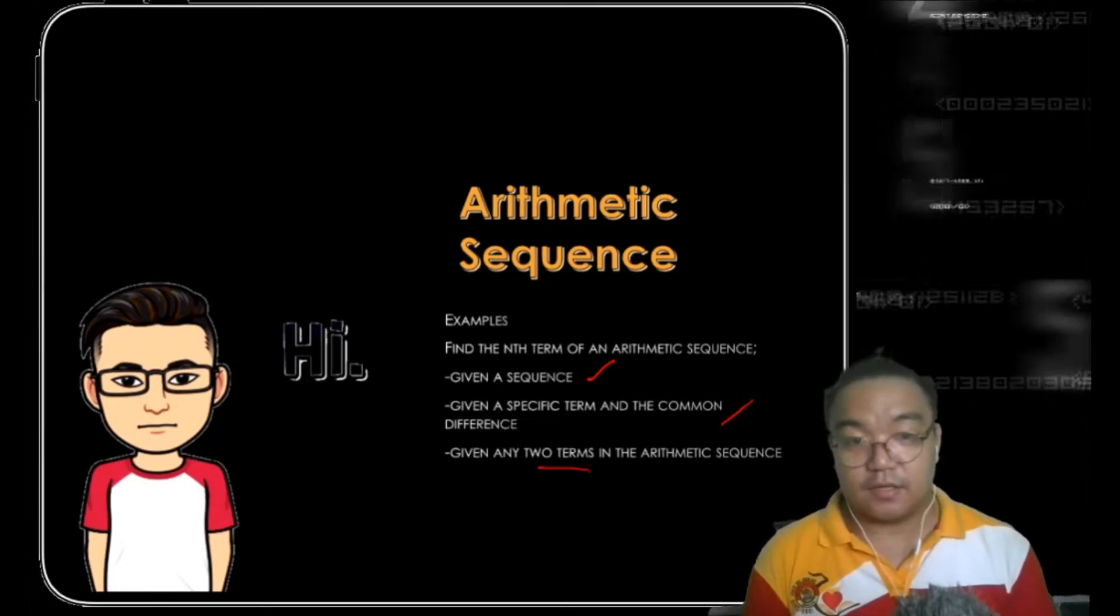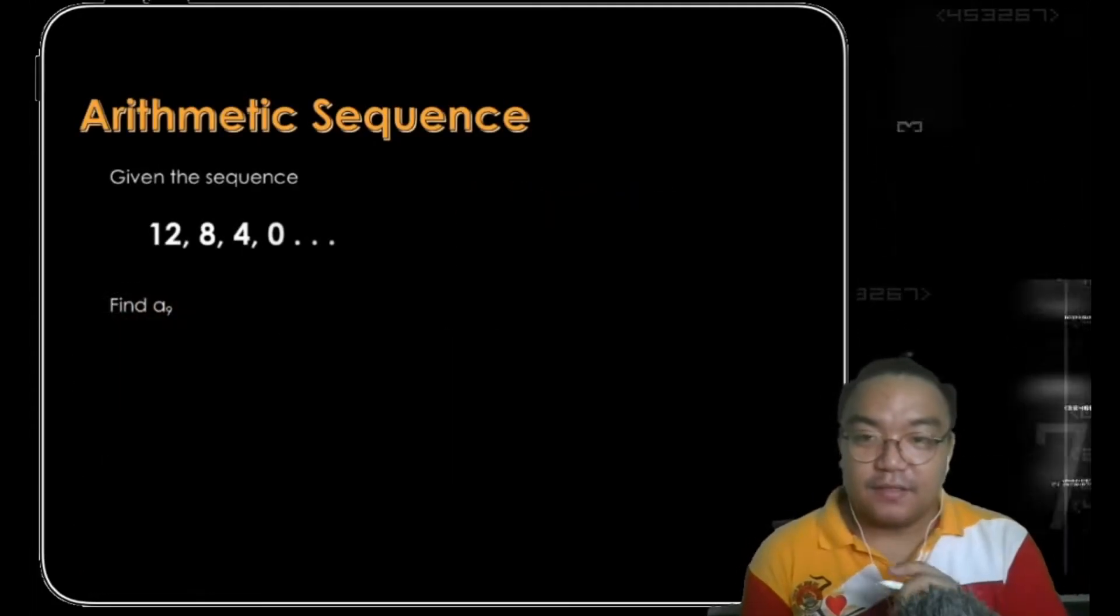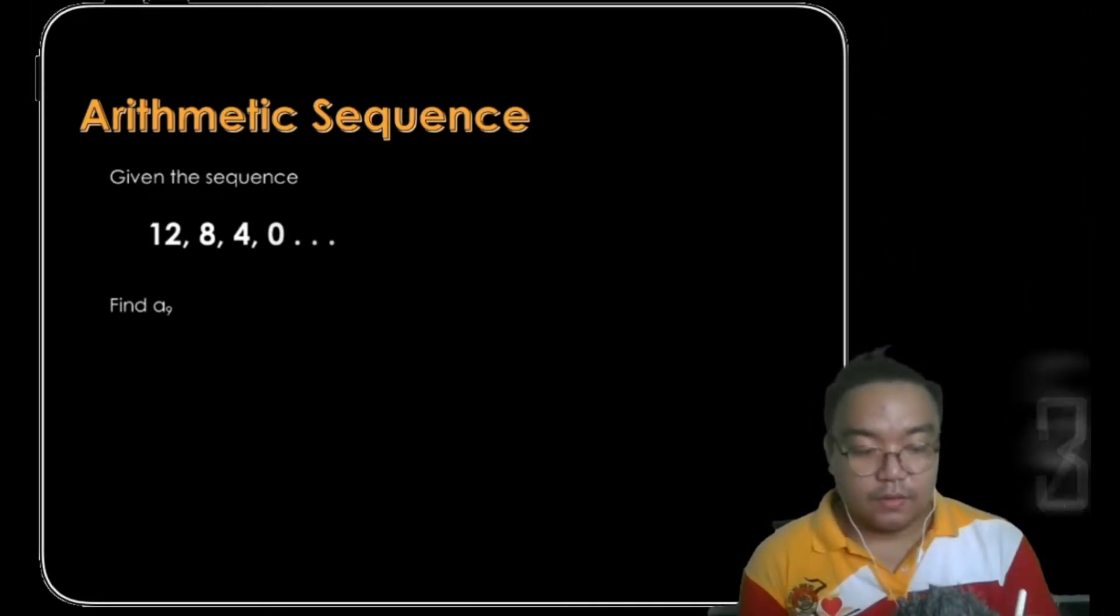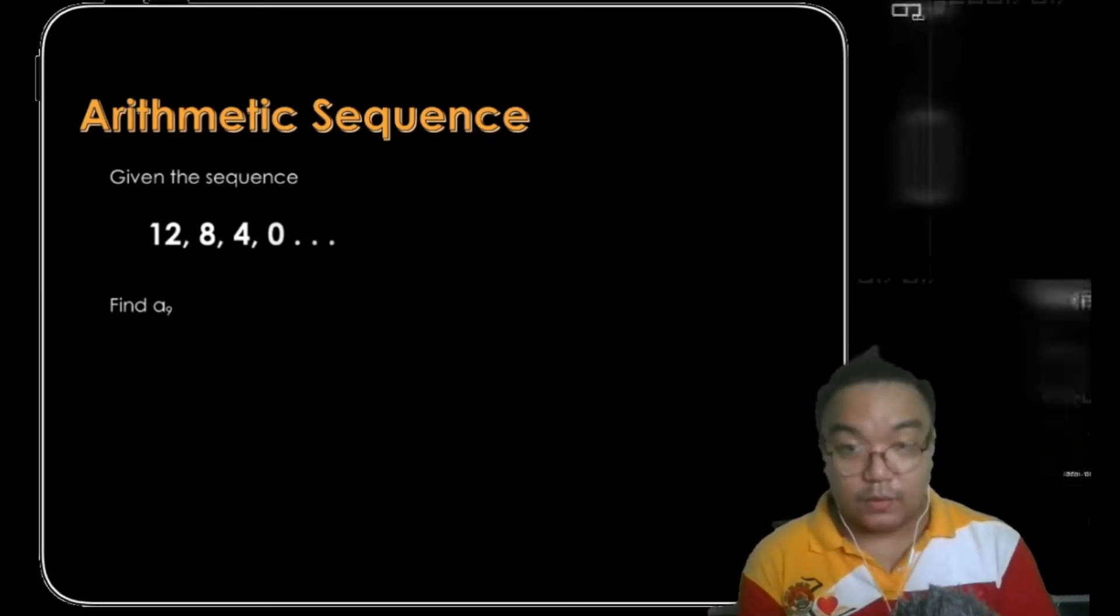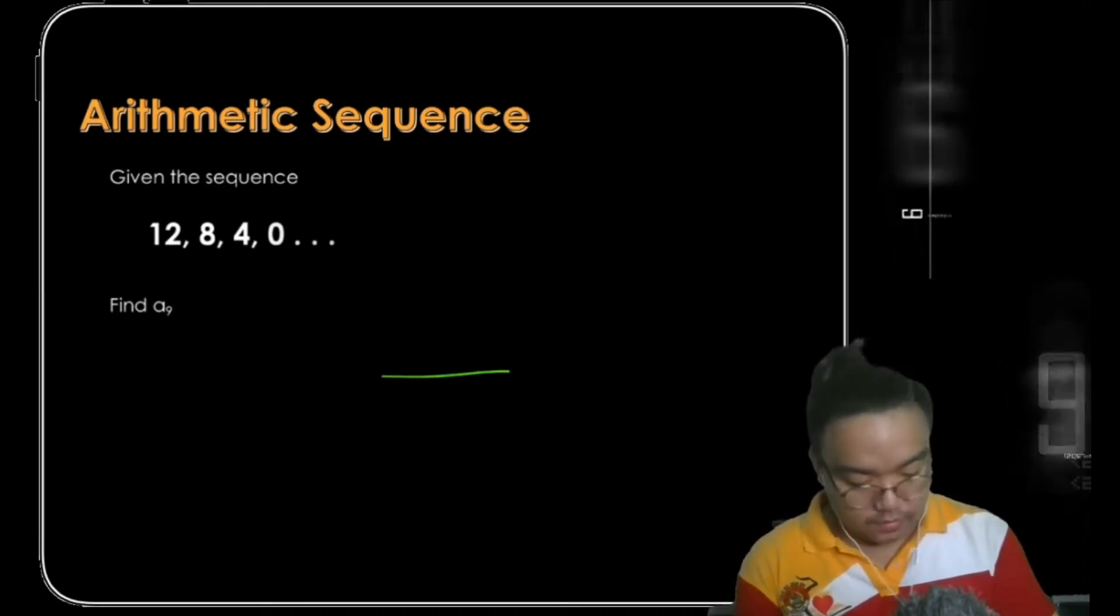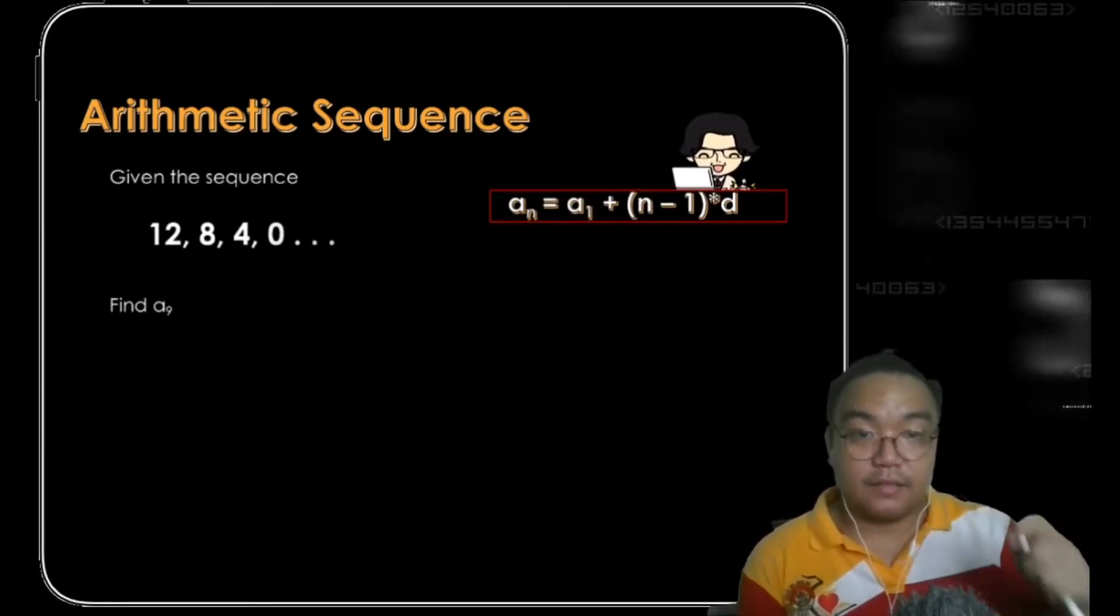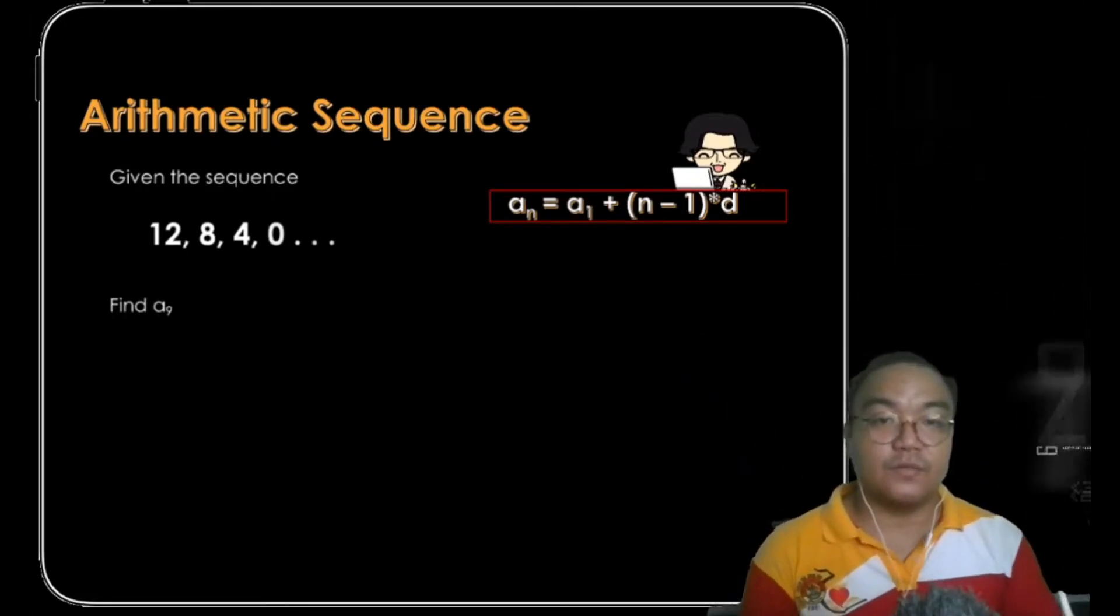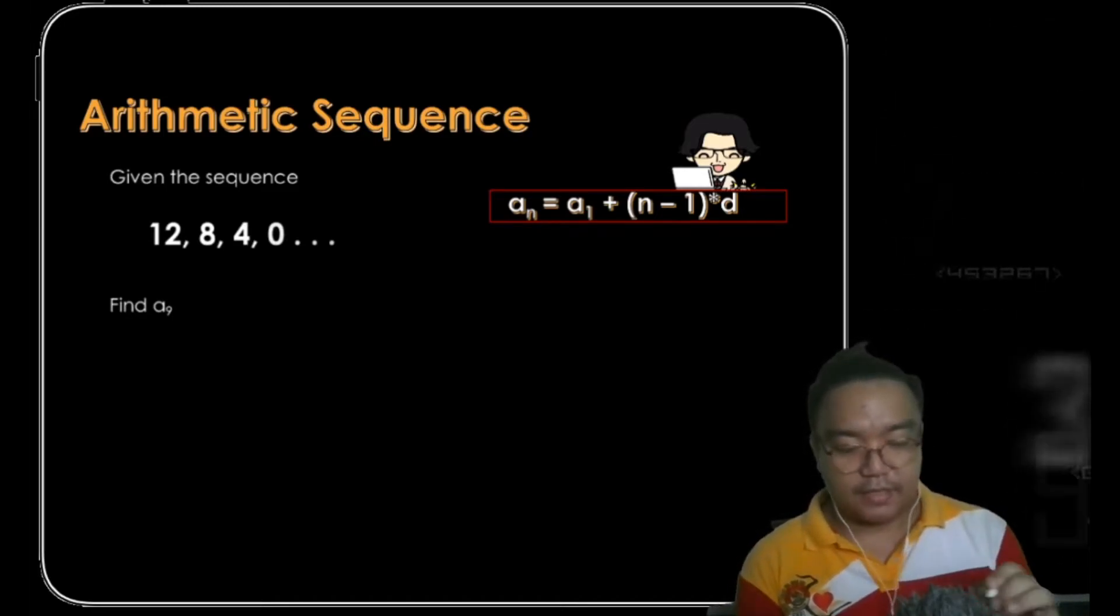Let's proceed. Given the sequence 12, 8, 4, 0, find the ninth term. If we recall our formula, a sub n is equal to a sub 1 plus n minus 1 times the common difference d. So first things first, let us find the common difference of this sequence.